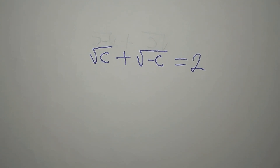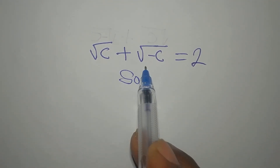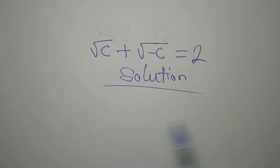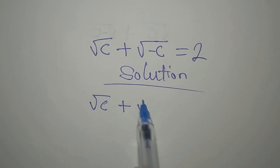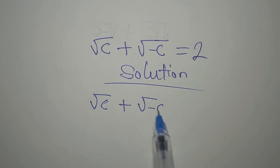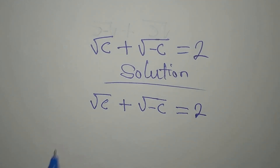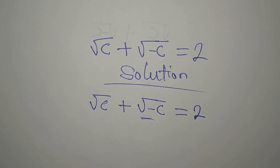Hi everyone, let's provide the solution to this problem. Square root of c plus square root of negative c equals 2. Our target is to make this the subject.